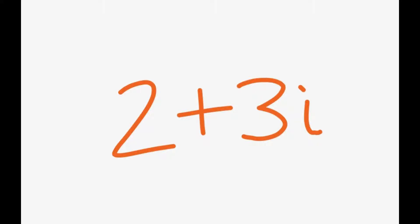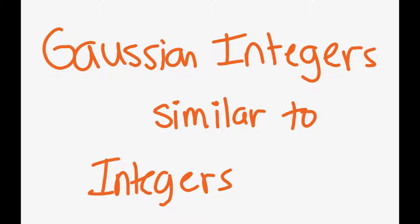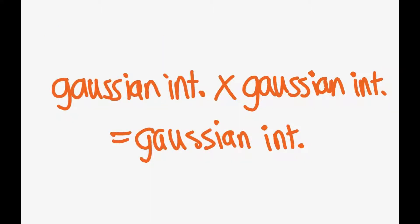The Gaussian integers are a group of numbers that have similar properties with the integers. A Gaussian integer times a Gaussian integer is also a Gaussian integer. There are Gaussian primes and much more. Those are just some of the similarities between Gaussian integers and integers.